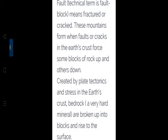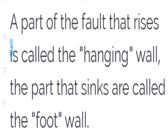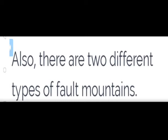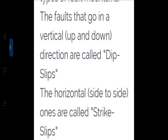Fault block mountains - these form when faults or cracks in the earth's crust force some blocks of rock up and others down, created by plate tectonics and stress in the earth's crust. The part of the fault that rises is called the hanging wall; the part that sinks is called the foot wall. Faults going vertical up and down are dip slips; horizontal side-to-side are strike slips.